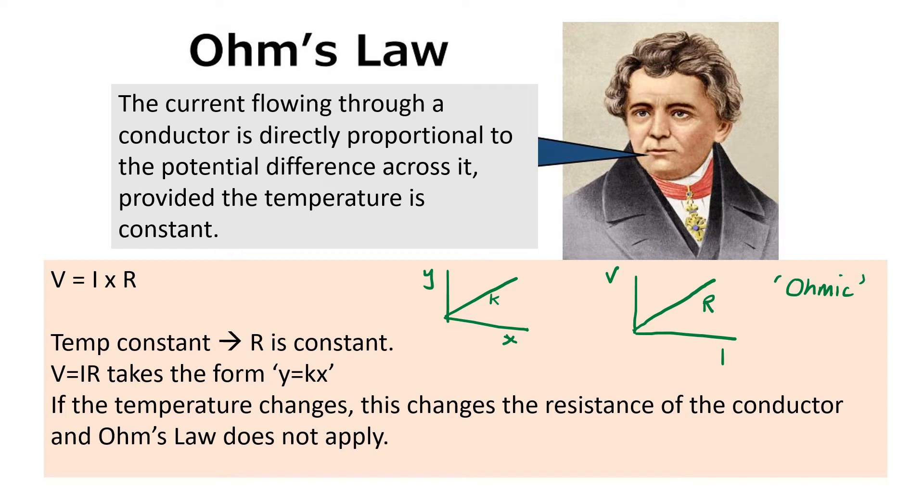Because R is constant we've got a constant of proportionality. If you look at the graph sketched in green, y equals kx is sketched on the right, y against x where k is the gradient which is constant. If a component is ohmic, follows Ohm's law, then if we plot V against I we get a straight line passing through the origin with a gradient of R which is the resistance. If the temperature changes, this changes the resistance and Ohm's law does not apply.